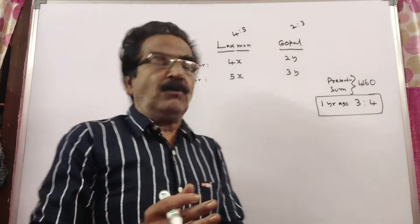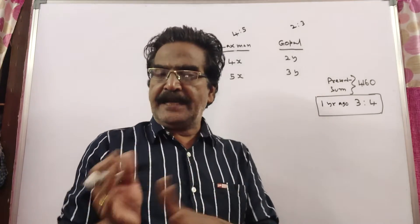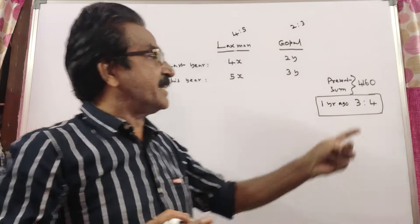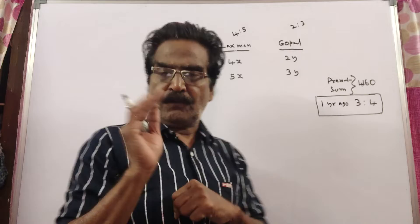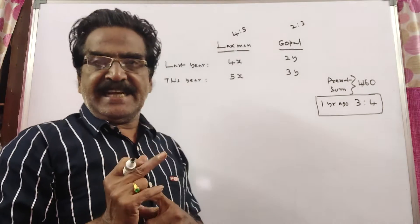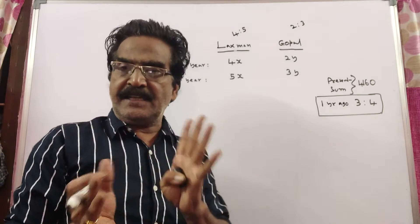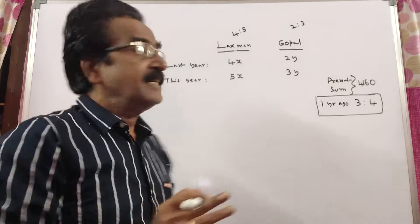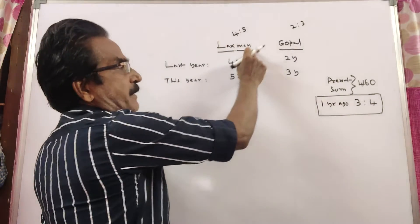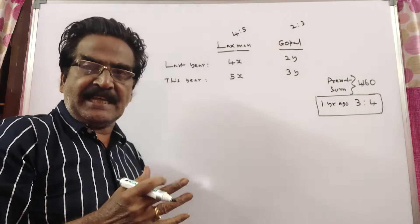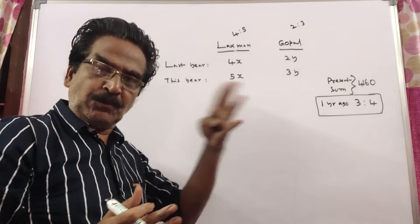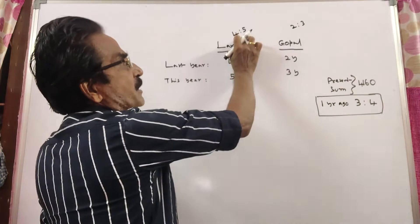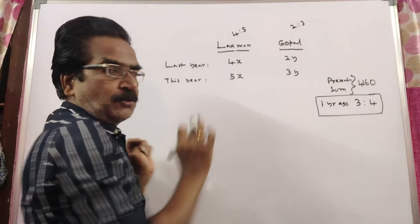See friends, one year ago, the ratio of Lakshman's and Gopal's salaries are in the ratio 3 to 4. And it is given that the ratio of the individual salaries, that is Lakshman's and Gopal's individual salaries last year to this year is 4 is to 5 and 2 is to 3.